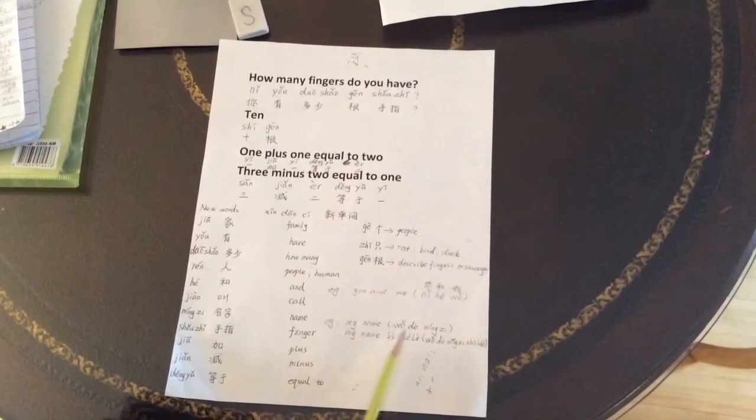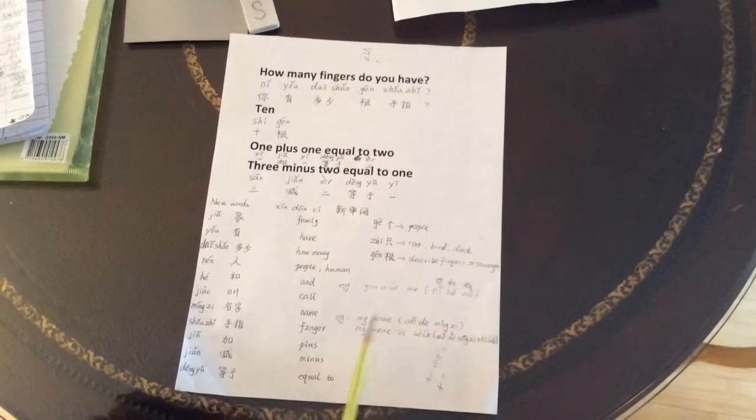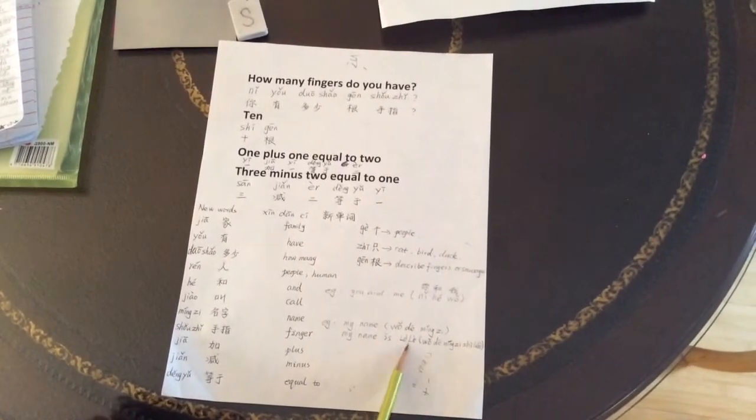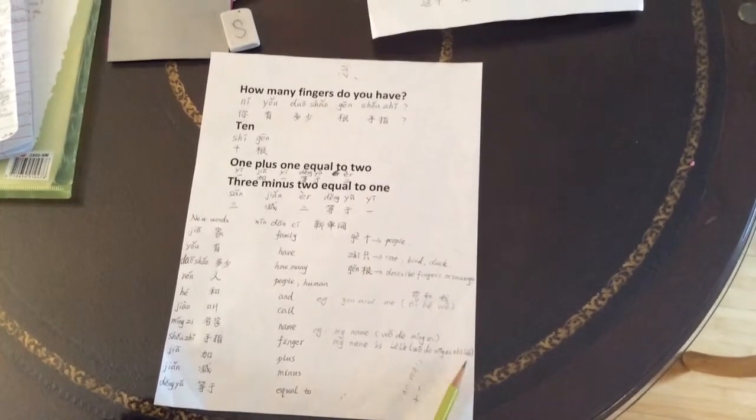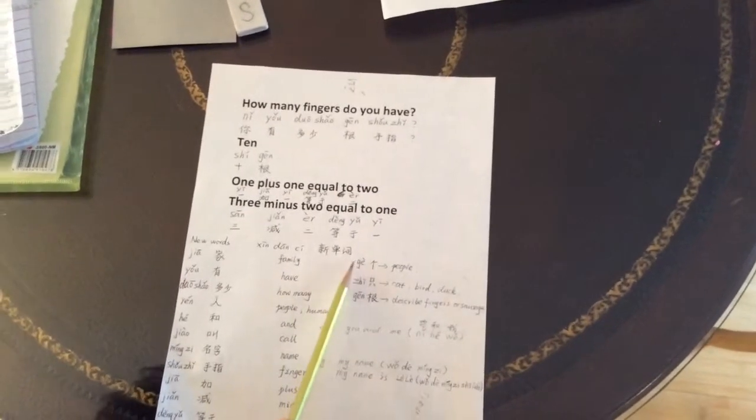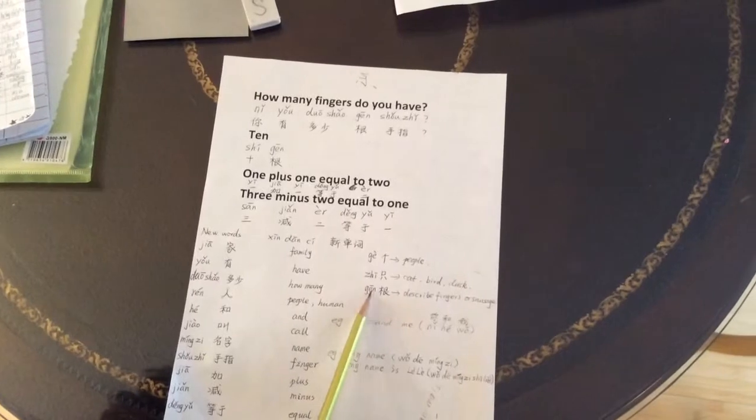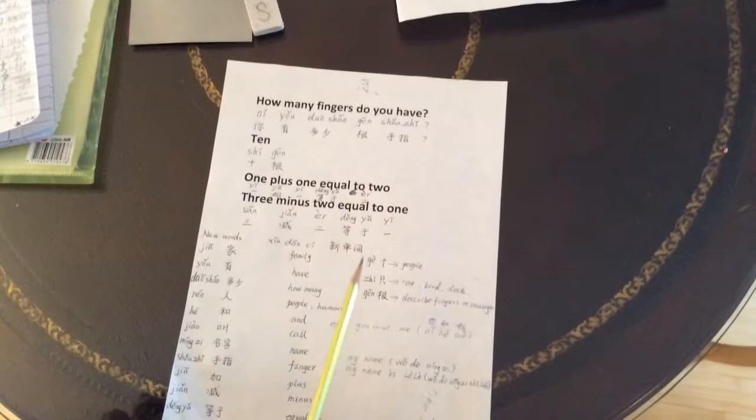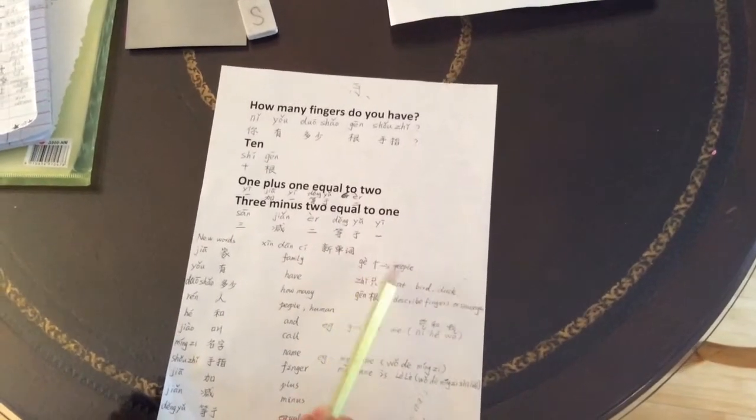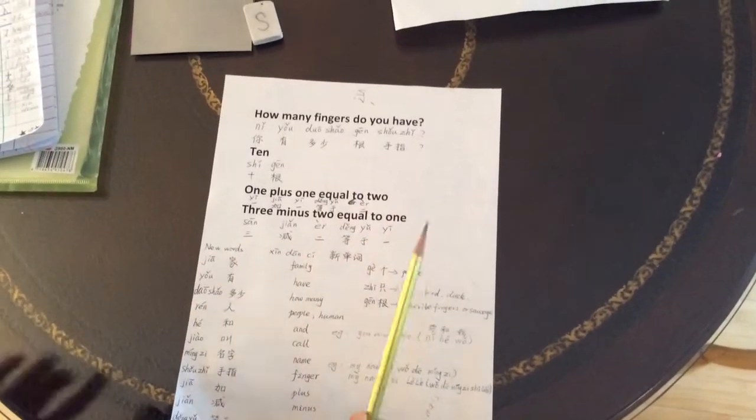My name, 我的名字. My name is 乐乐, 我的名字是乐乐. 个, 只, 根 are used to describe numbers. Like 个 is used to describe people. One people, 一个人.